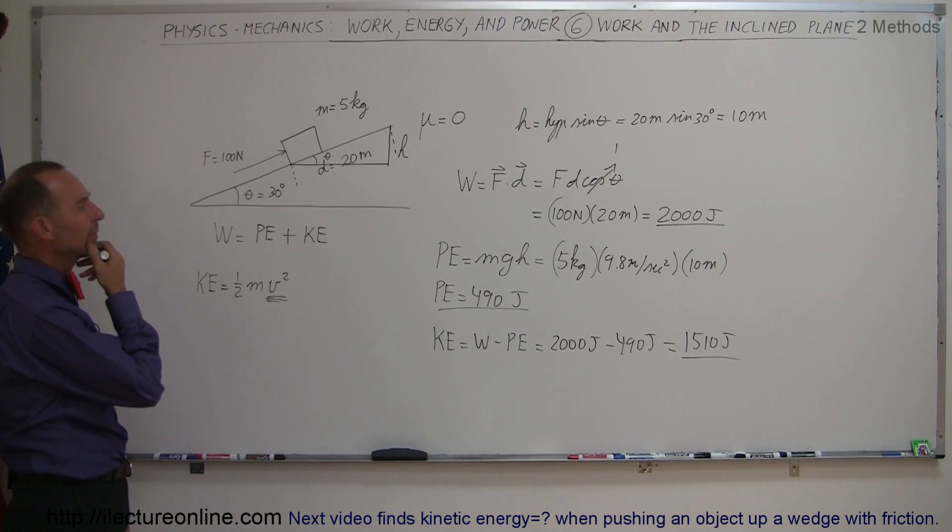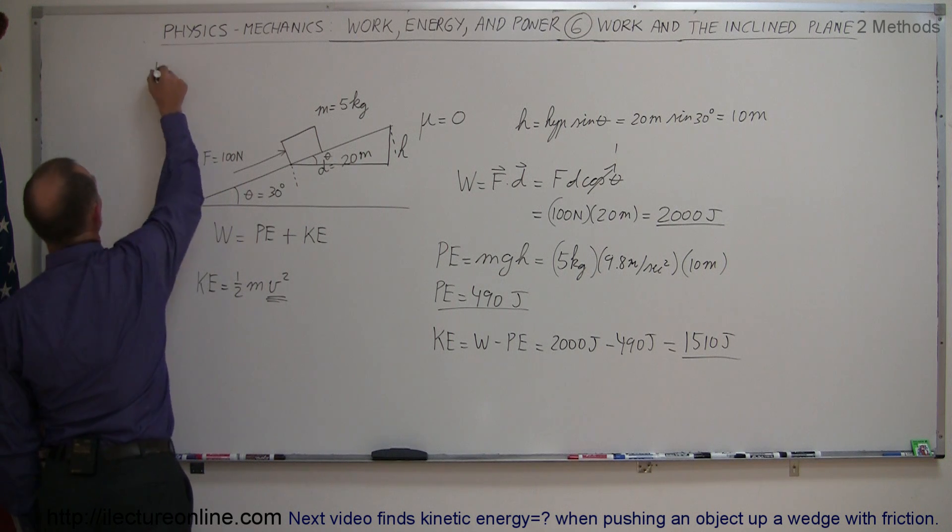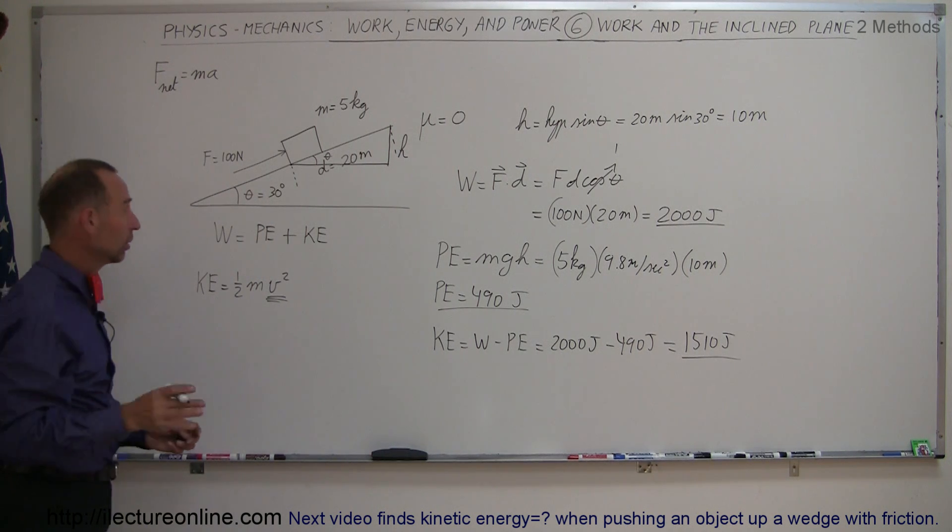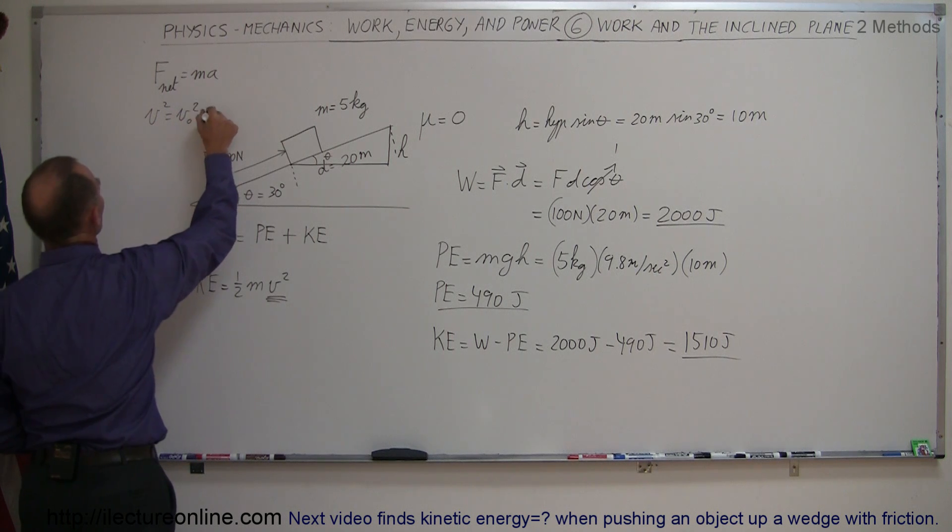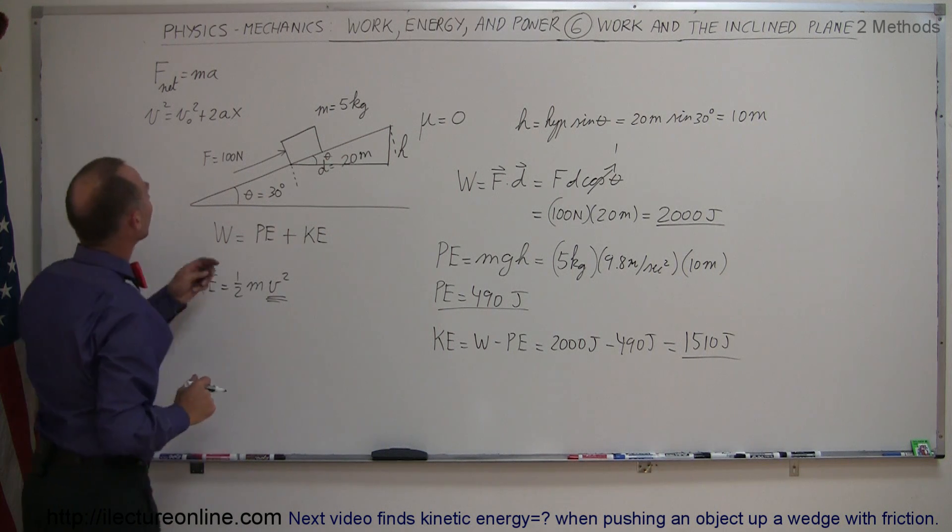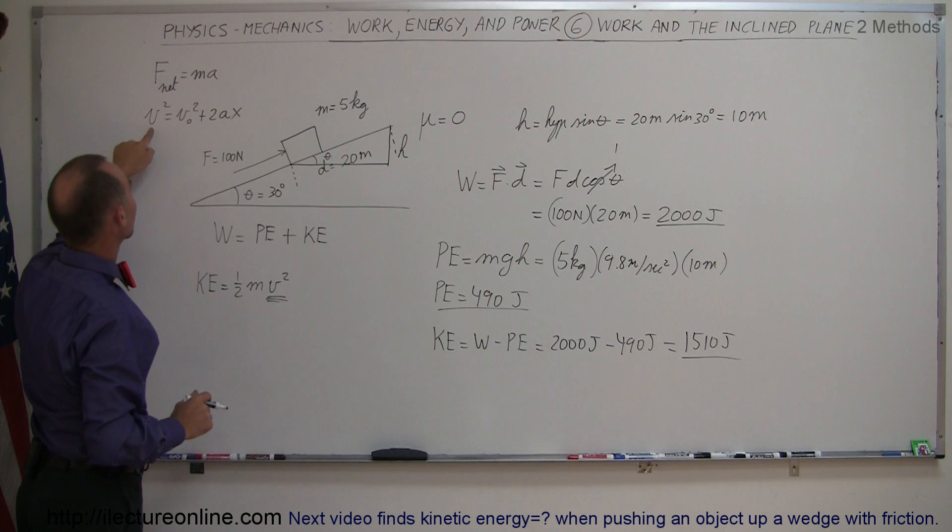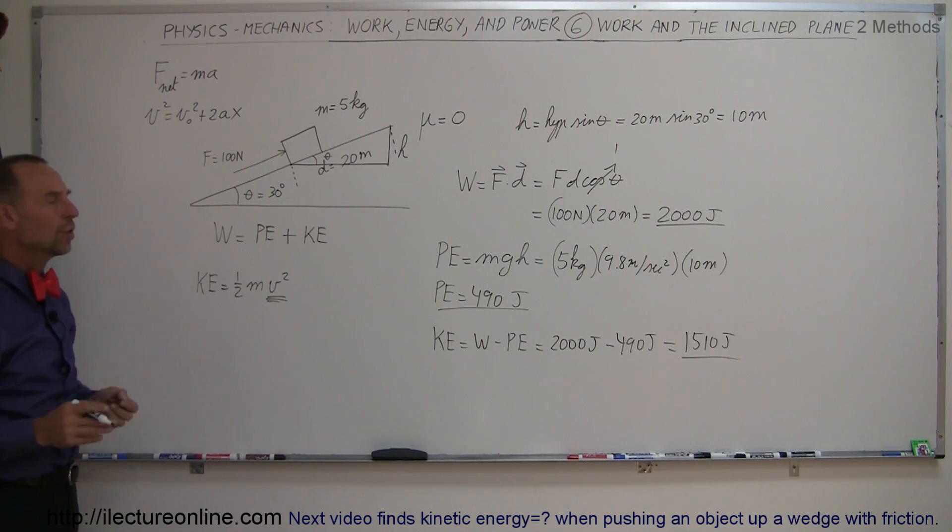So, can we figure out how much velocity the object will have? Well, we can use the equation, f equals ma, and of course that needs to be f net equals ma, to calculate the acceleration, and then we can use the equation, v squared equals v initial squared plus 2ax, x being of course along the slope of the incline. Once we know the acceleration, we know the distance, the initial velocity is zero, we can find the final velocity, and therefore also find the kinetic energy that way. So let's do that.